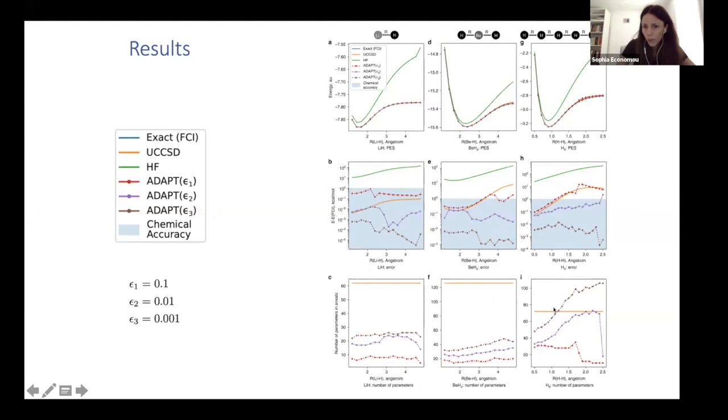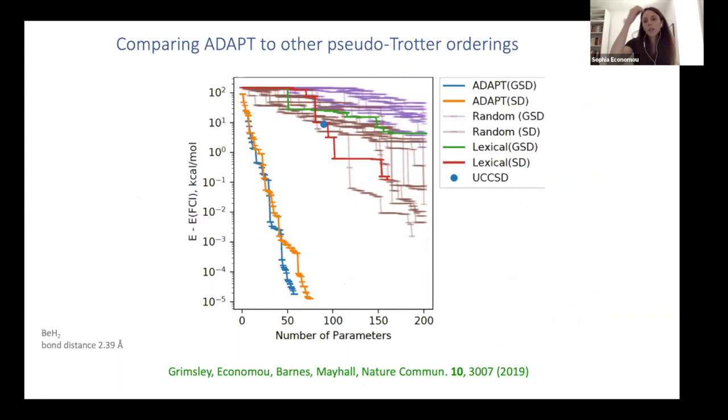And the only case where you need more parameters in ADAPT is the case where actually, if you look at the orange line here, UCCSD doesn't perform within chemical accuracy.